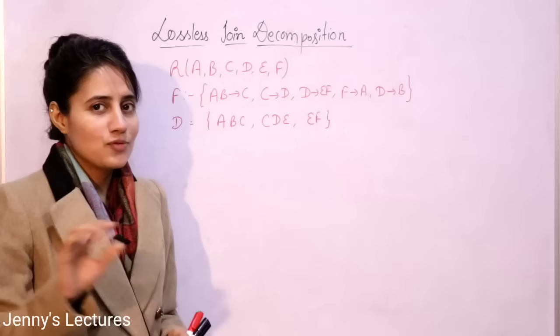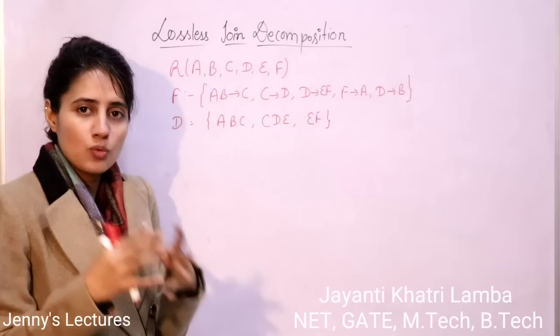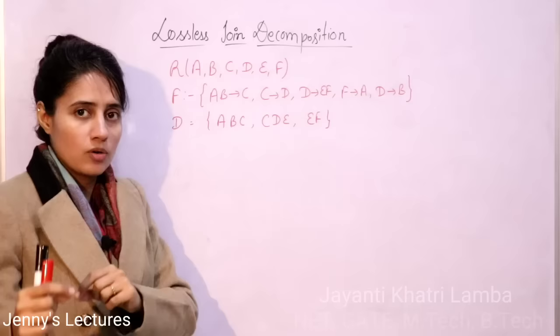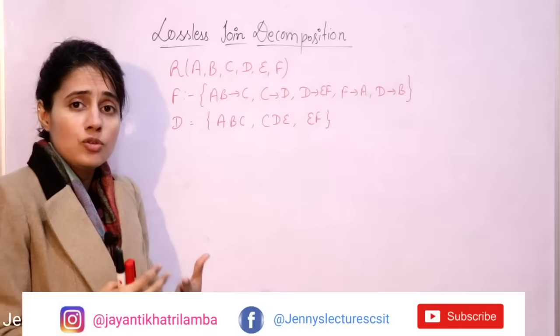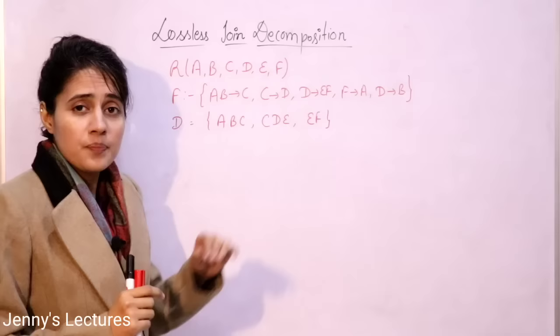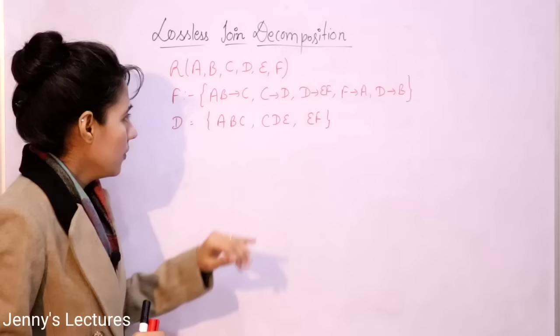So far in this DBMS lecture series we have discussed all the normal forms, decomposition, and two decomposition properties: dependency preserving and lossless join decomposition. In the previous video we discussed practice questions on how to check whether a given decomposition is lossless join or not, using simple examples with a relation decomposed into two sub-relations. In this video I will discuss a more complex example where the relation is decomposed into three sub-relations.